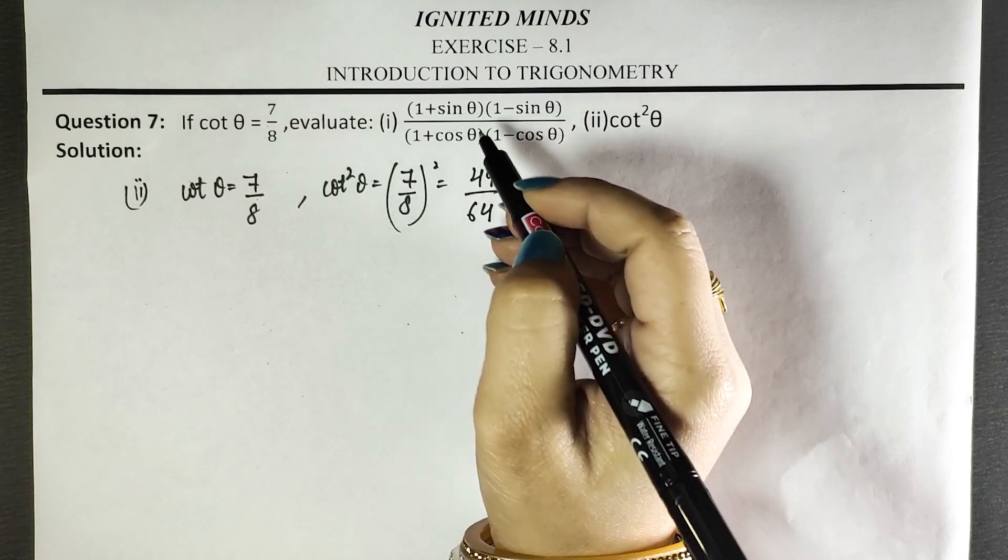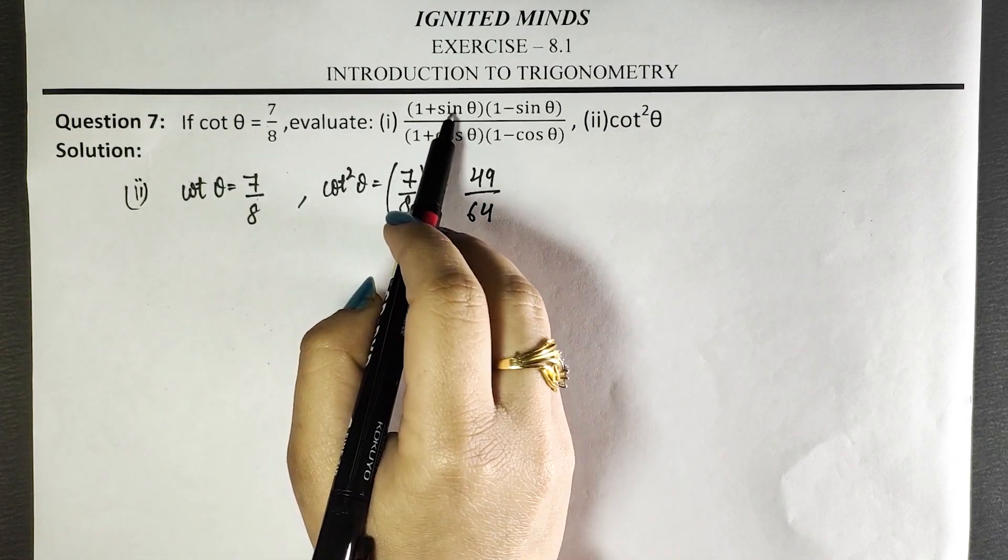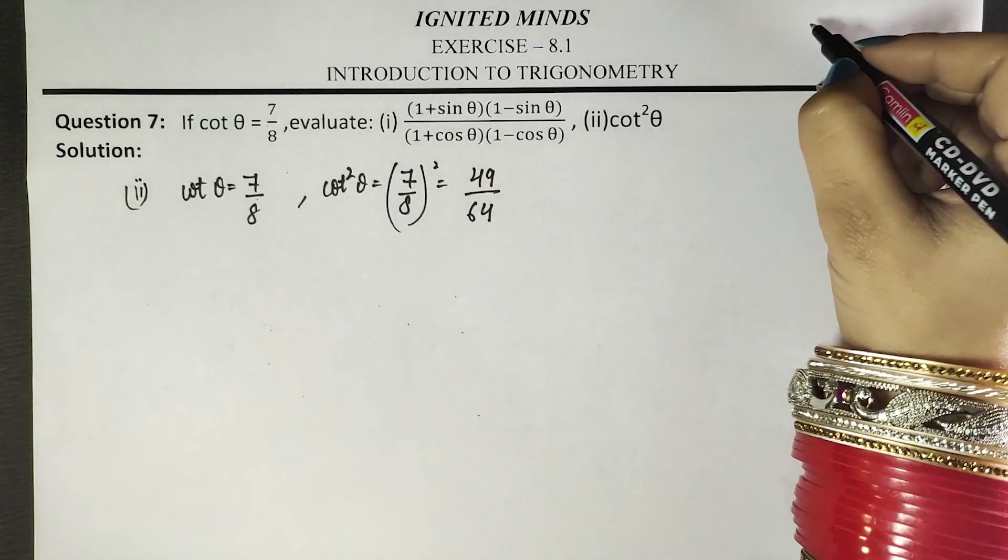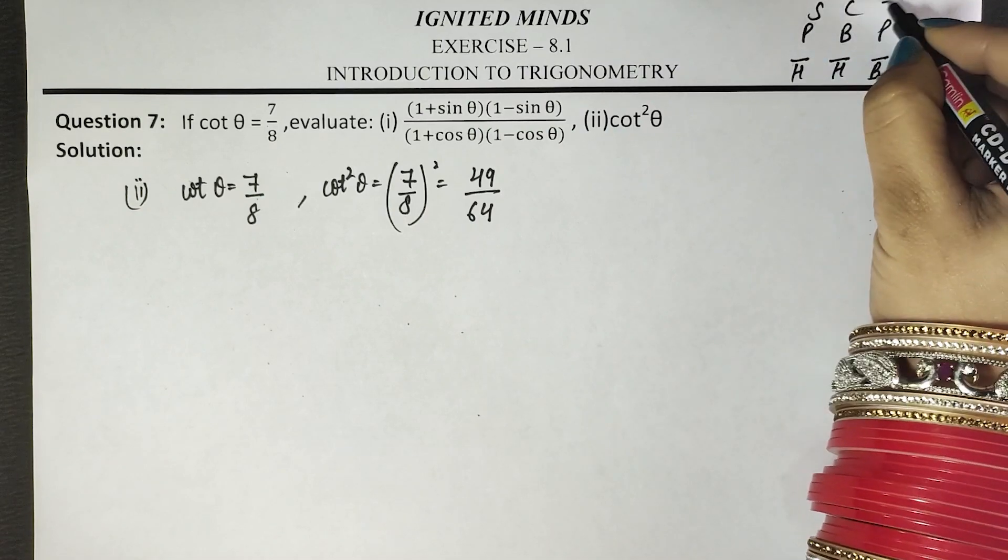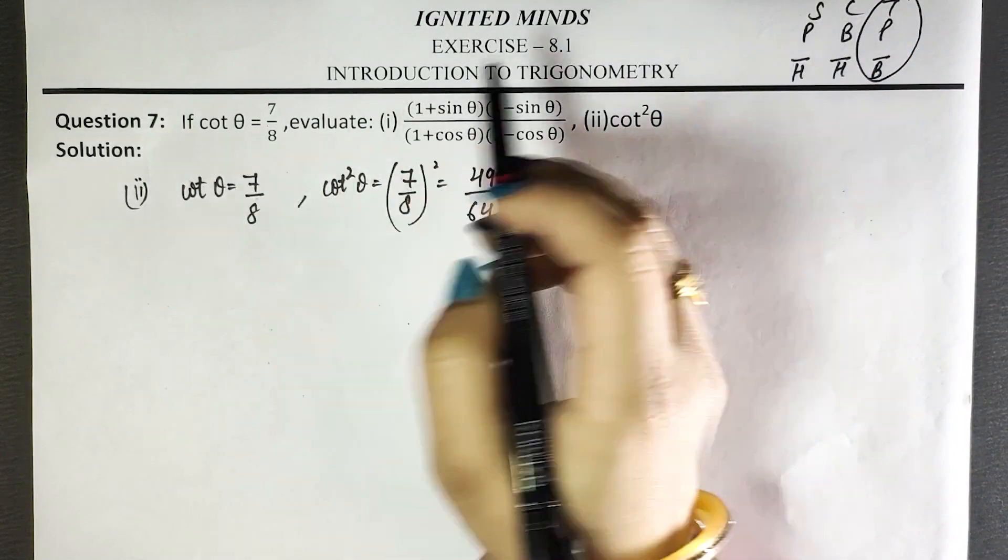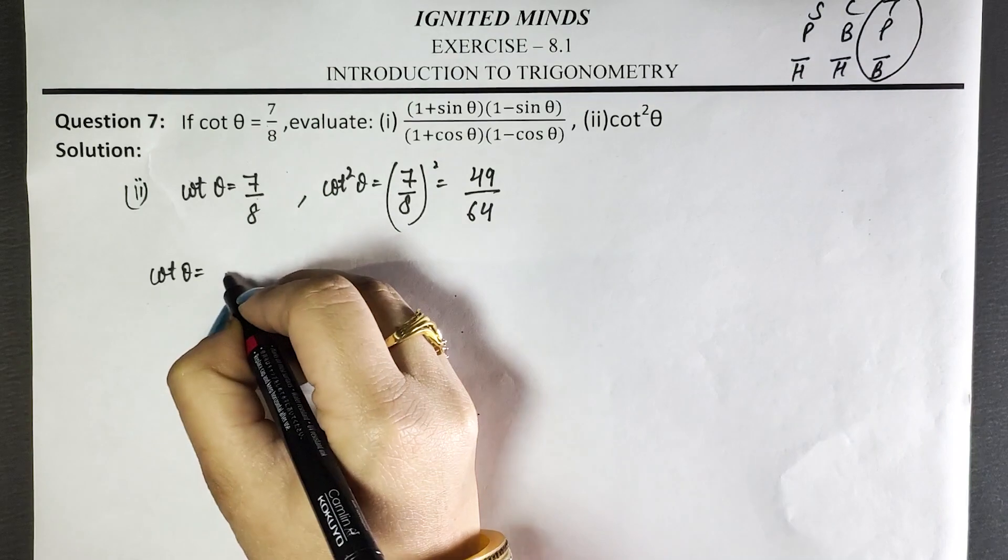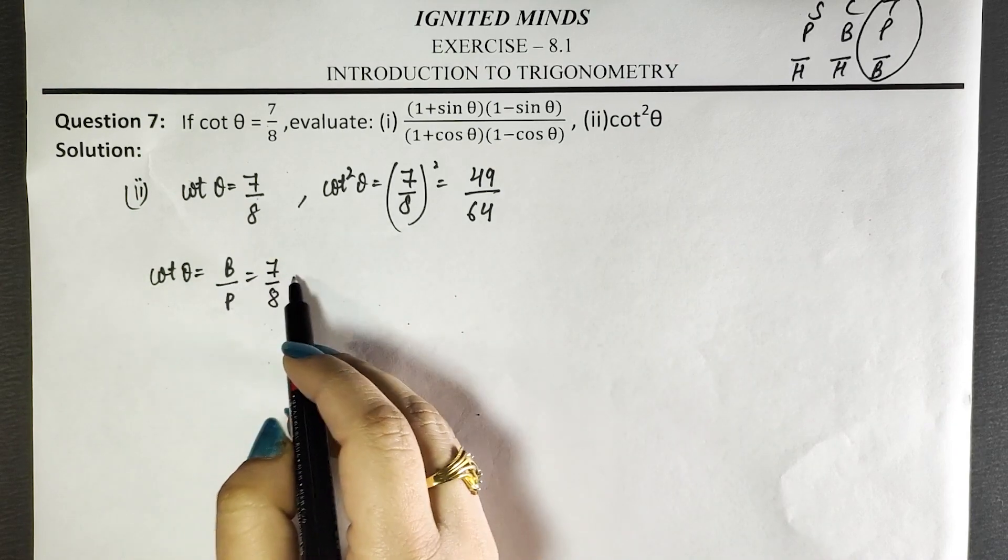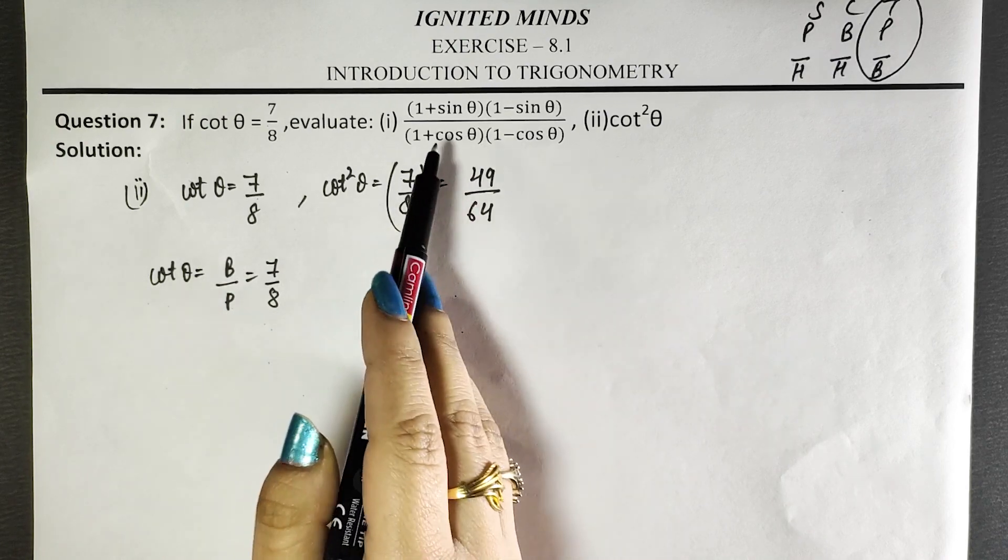Now we will do the first part. In the first part, you have sin and cos. So we know that cot θ is called base by perpendicular. So you have base 7, perpendicular 8, so what you will do, you will make a triangle and find the values of sin and cos.